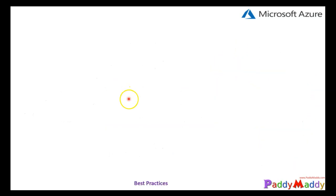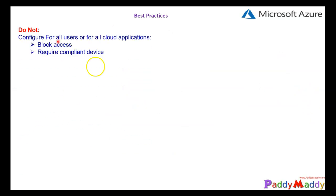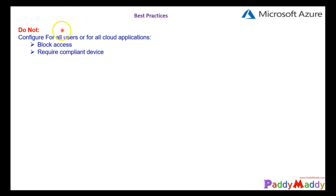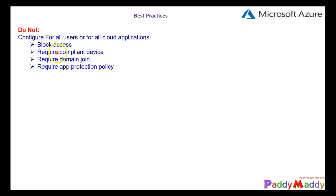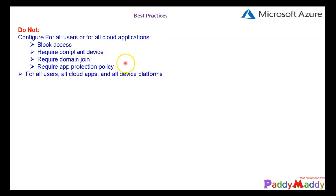For best practices: do not configure policies targeting all users or all cloud applications at once. Moreover, do not block yourself — make sure you are an exception. Otherwise, if something goes wrong and that policy applies to you, you might get locked out completely and unable to access the Azure portal to reconfigure anything.